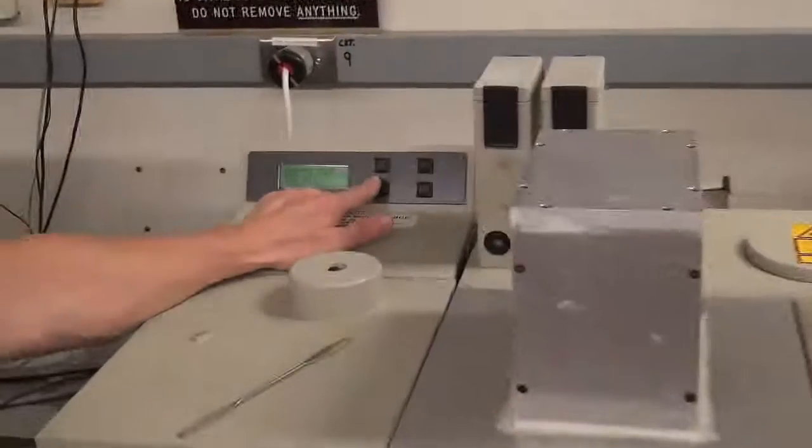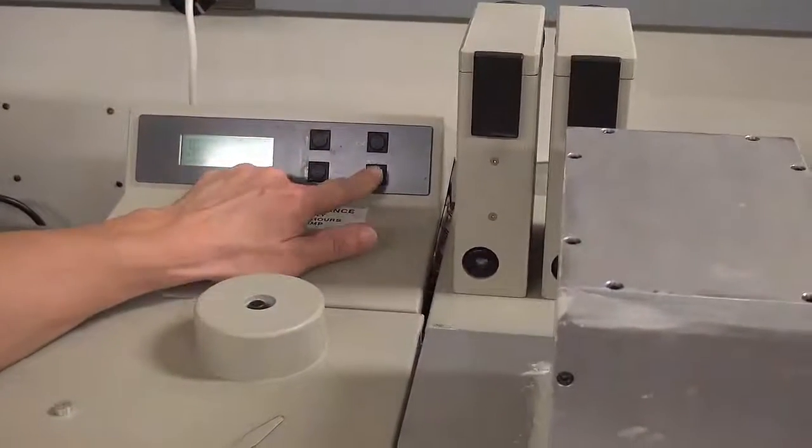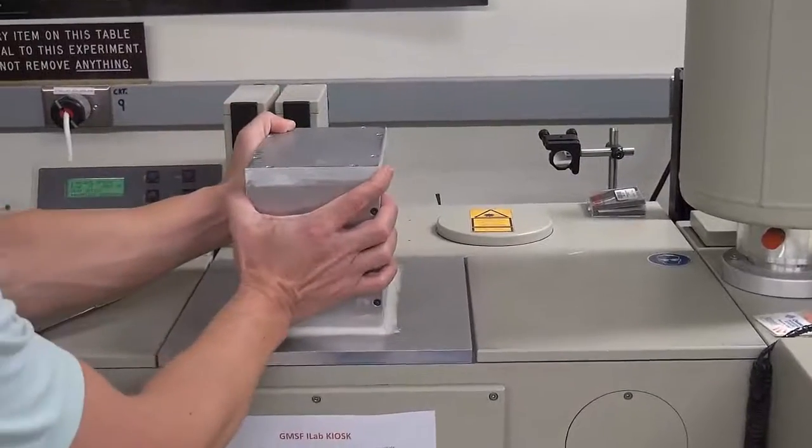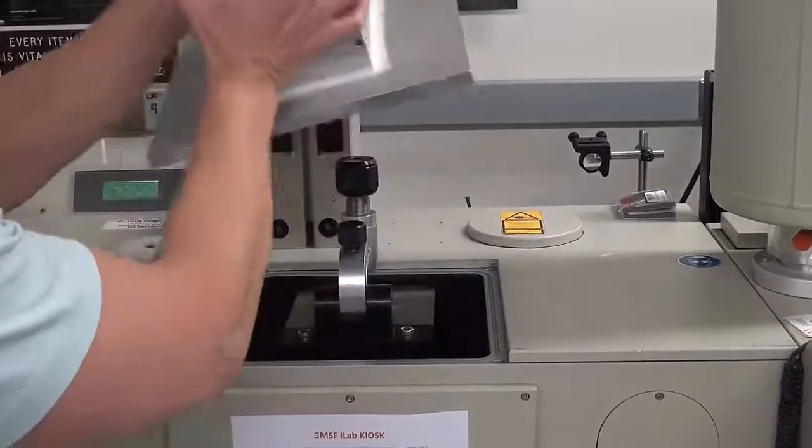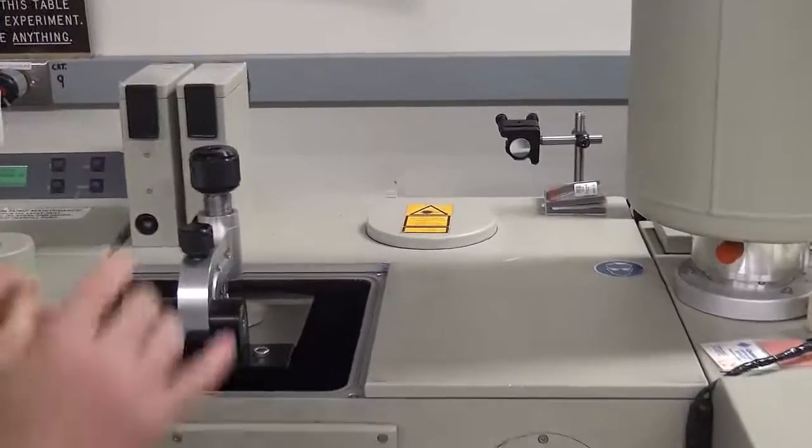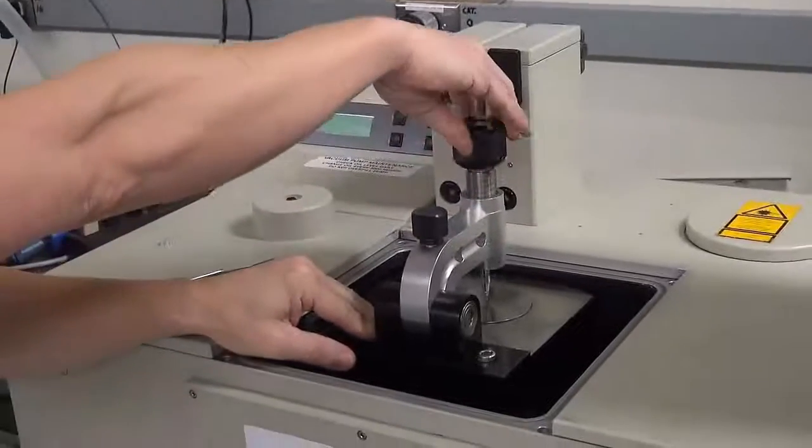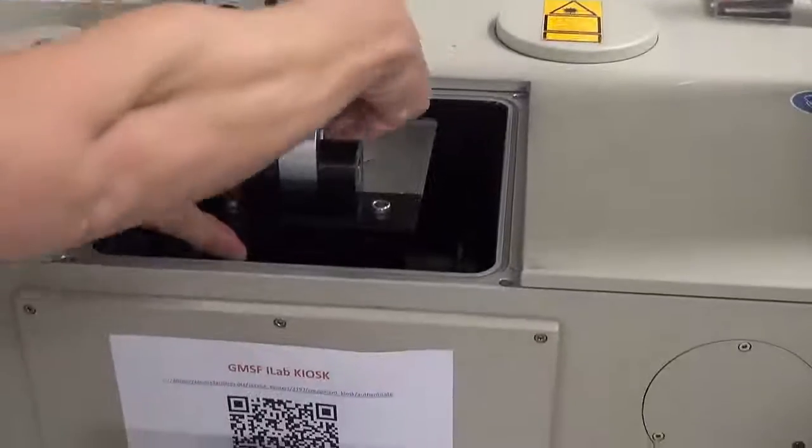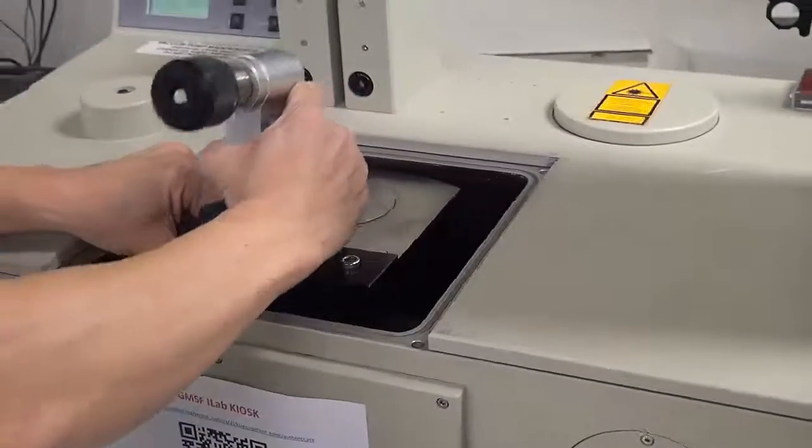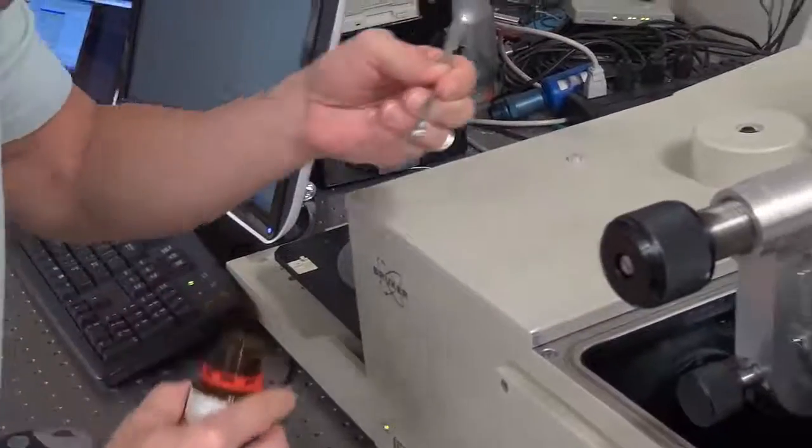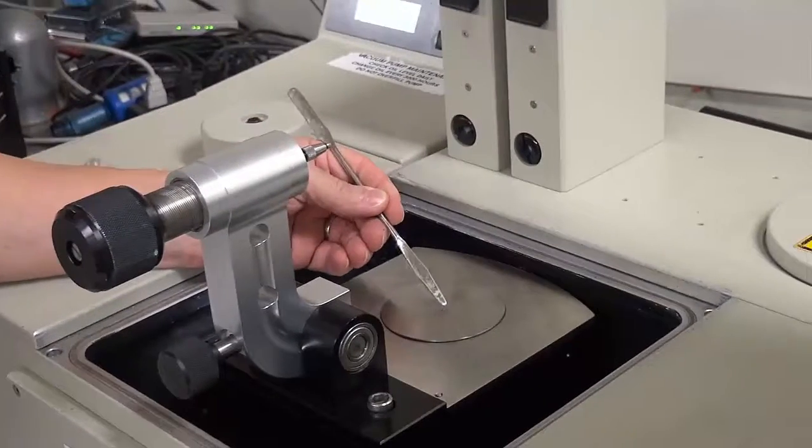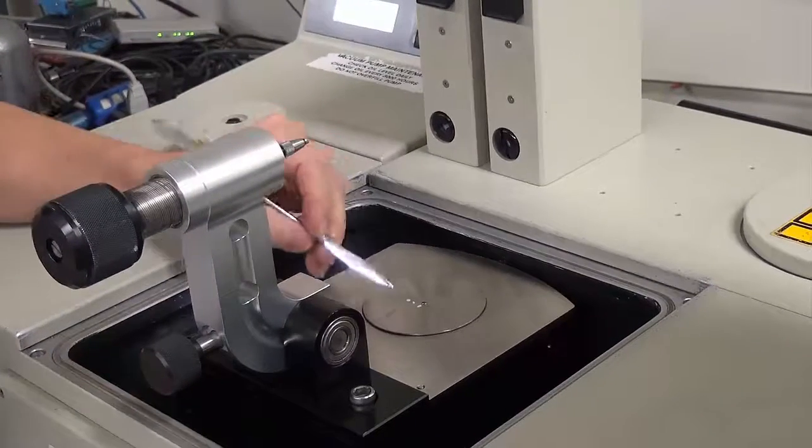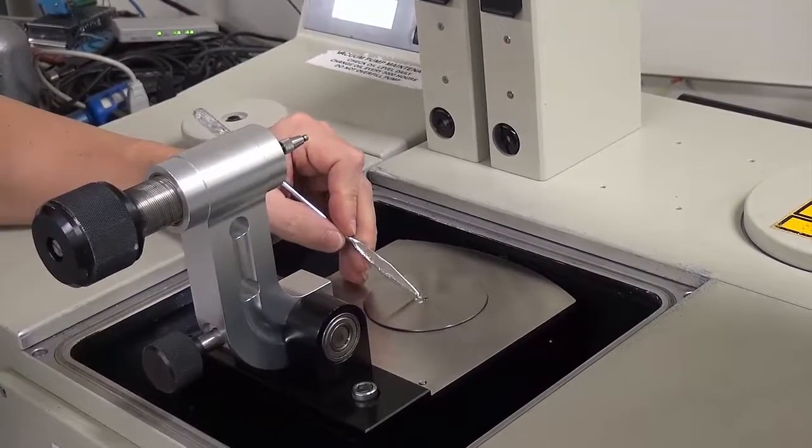Now you are ready to load your sample. So first, you're going to want to vent the system, and then after the system is vented, carefully lift the lid and place it on the table. You can load your sample without lifting the arm, but it is much easier to lift the arm first. Make sure to hold down the ATR arm when moving the arm.